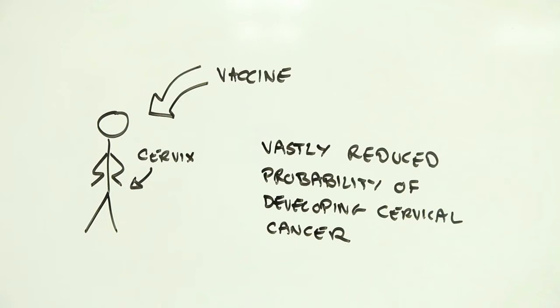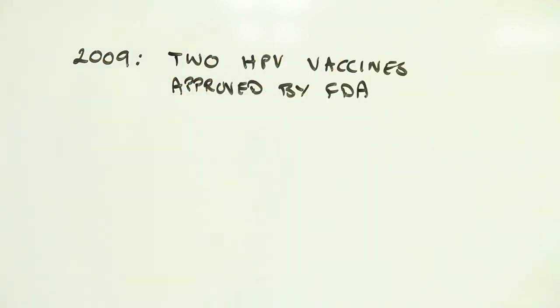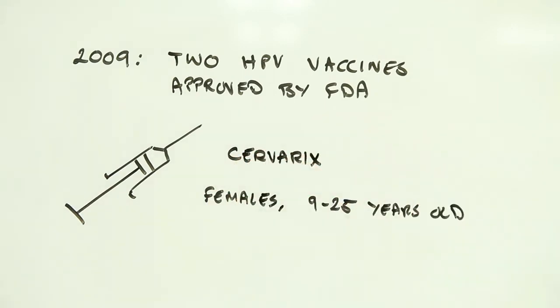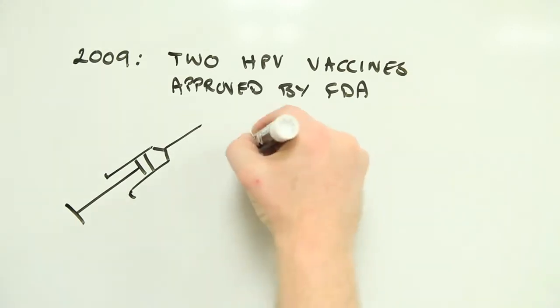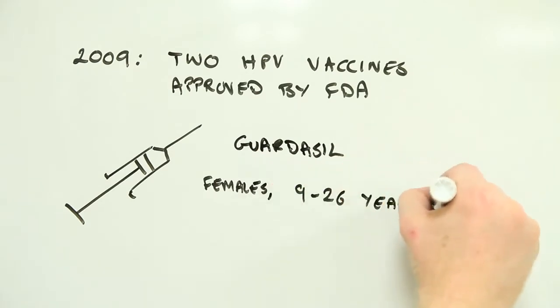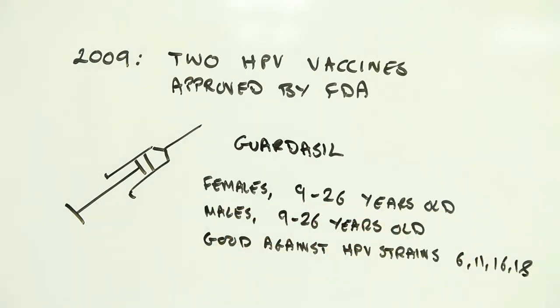Which is exactly what has happened. In 2009, the US Food and Drug Administration approved two vaccines for protection against cervical cancer. These were Cervarix, a vaccine approved for girls and women between the ages of 9 and 25 that works on two of the highest risk strains of HPV, and Gardasil, a vaccine approved for use by females and males between the ages of 9 and 26 that protects against four of the highest risk strains of HPV.